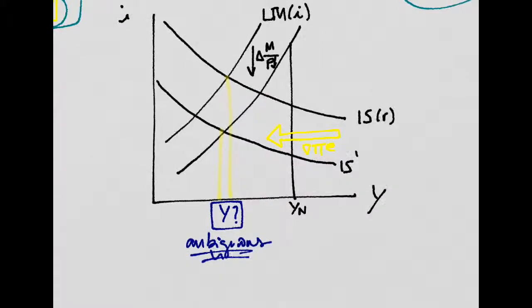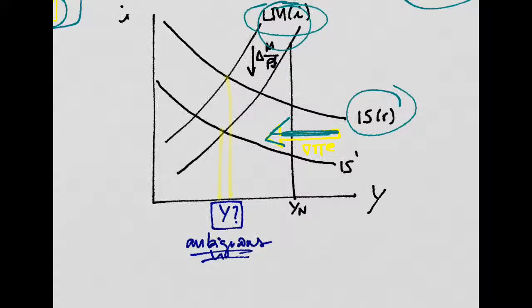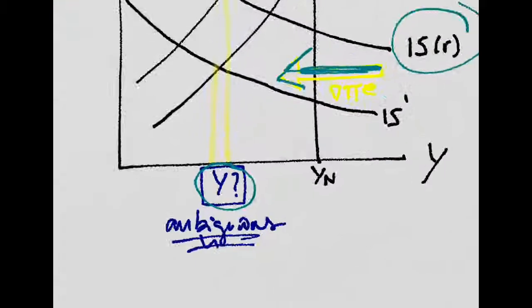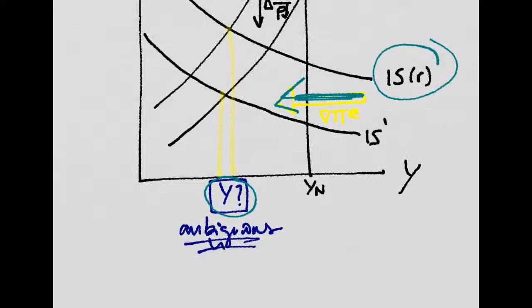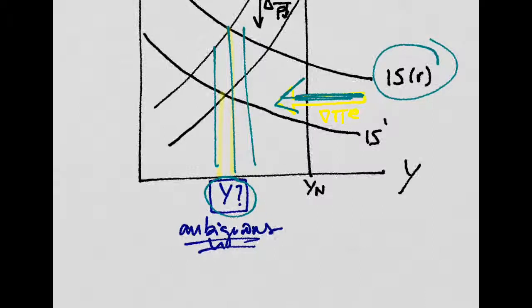First, you have the shift to the left of the IS curve because of the deflationary expectations, but then you have the shift down of the LM because of the decrease in prices. So it will actually depend on the elasticity of these two curves to the nominal interest rate where output is, because the result is actually ambiguous if we don't know those elasticities. It could be here, it could be here, it could be here. We don't know. So output here is ambiguous.